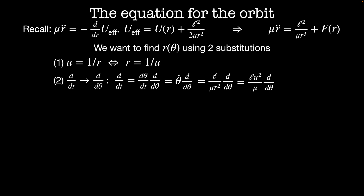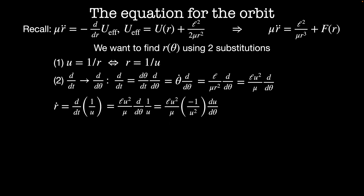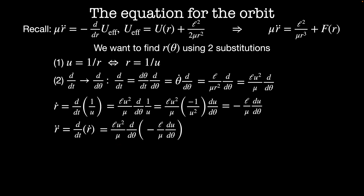Now that we've got our transformations, we'll look at some terms. First, r-dot equals d/dt of 1/u. We'll replace d/dt with the angular derivative definition, and we get L u squared over mu times d/d-theta of 1/u. When we take the theta derivative, we get L u squared over mu times minus 1/u squared times du/d-theta, which simplifies to minus L over mu times du/d-theta. To get the acceleration r-double-dot, we take the time derivative of r-dot. The time derivative becomes L u squared over mu times d/d-theta, and we get that r-double-dot equals minus L squared u squared over mu squared times d²u/d-theta².